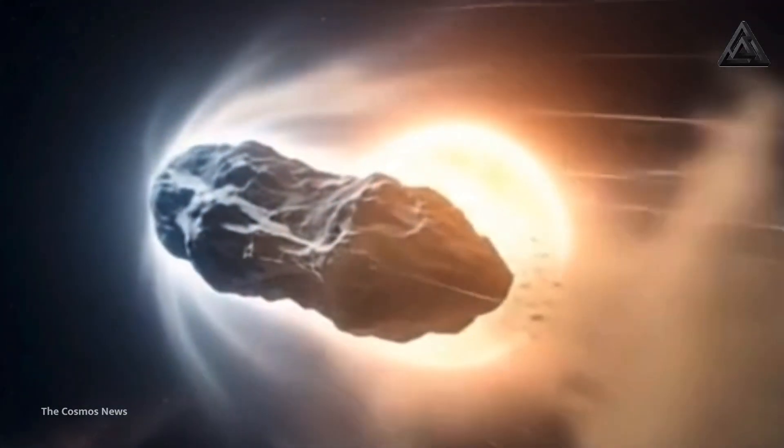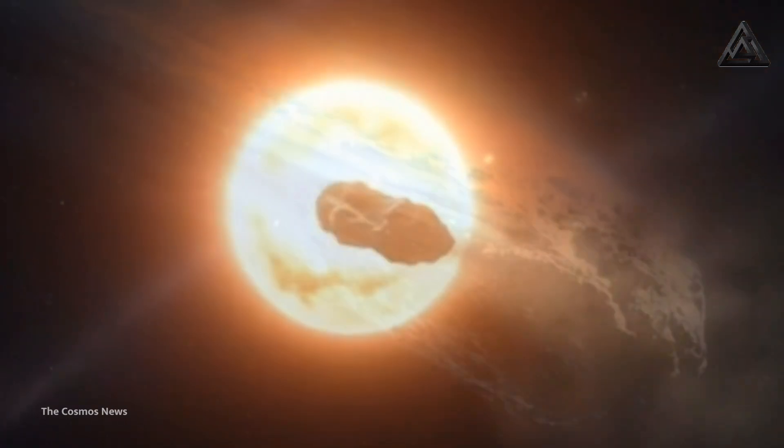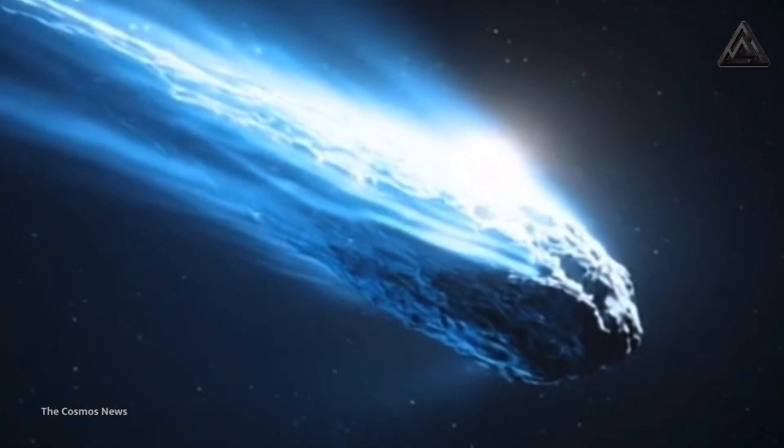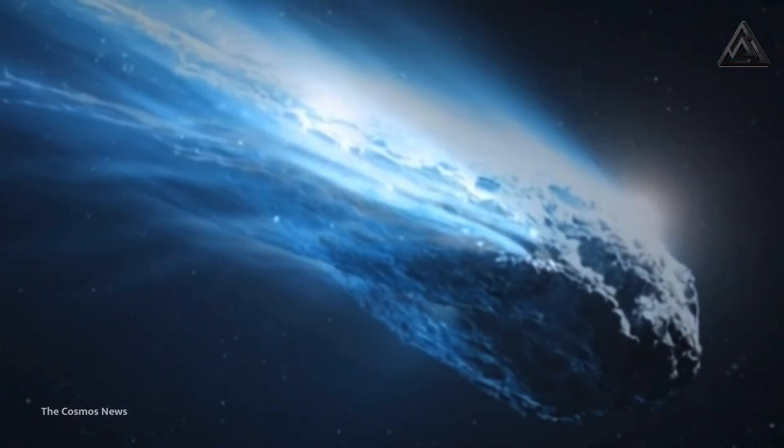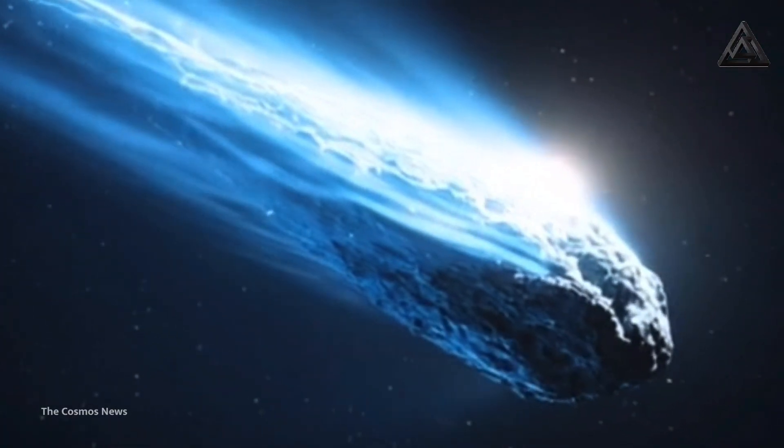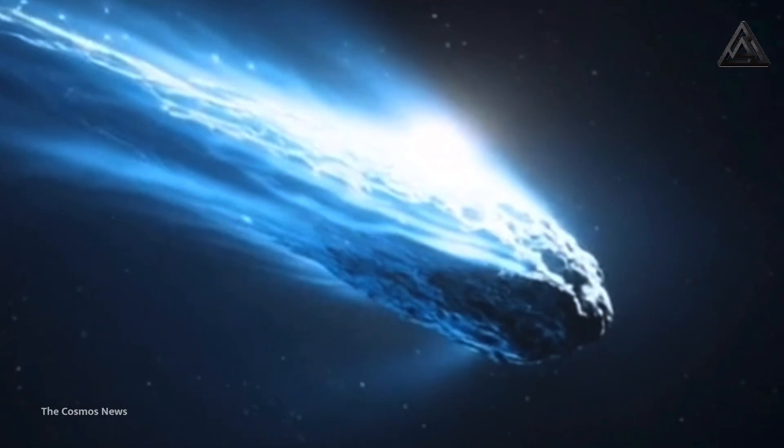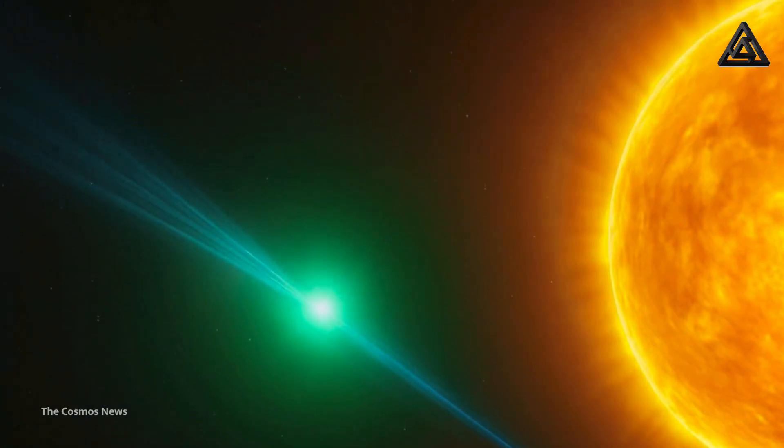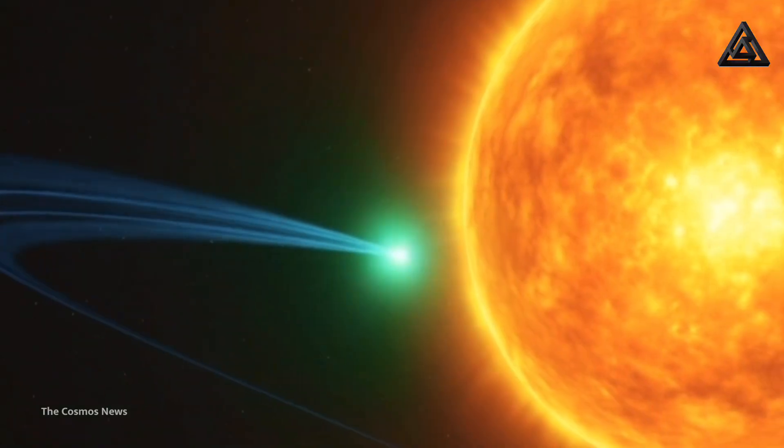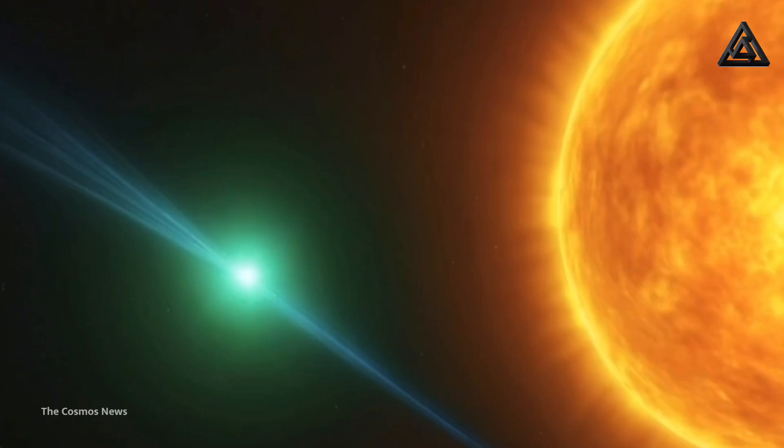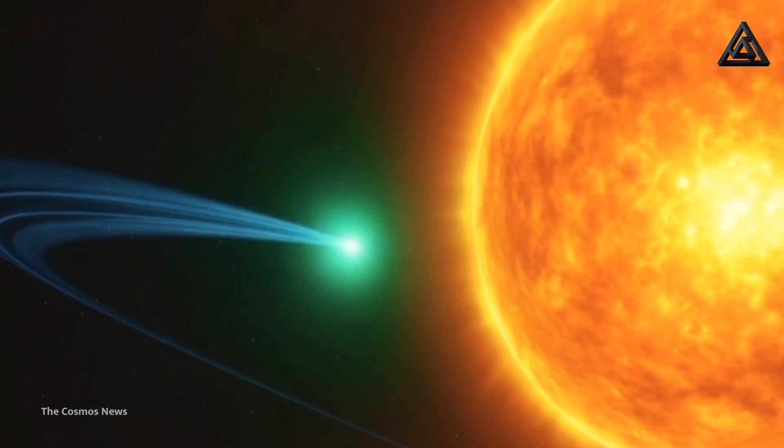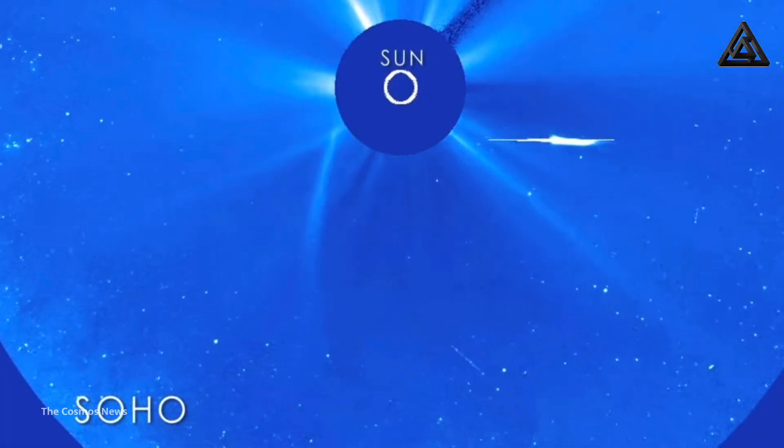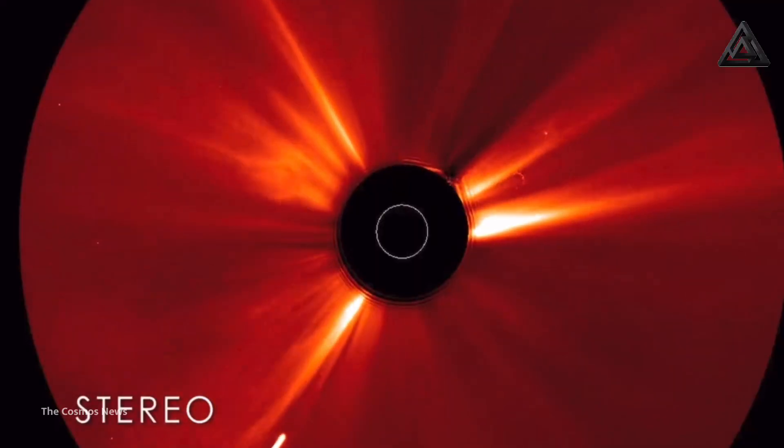Because 3i Atlas came from another star system, its unusual features teach us about the diversity of such objects. Its dust and gas behavior, tail dynamics, and composition provide a fresh data point for models of how bodies form and evolve in other planetary systems. The fact that it shows a sunward tail before transitioning into a conventional one means that observing comets at multiple distances from the sun is crucial. Models demonstrate how grains of ice and dust respond differently to sublimation, solar heating, and radiation pressure.